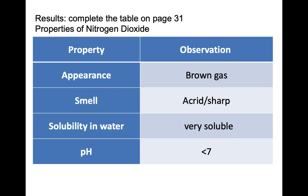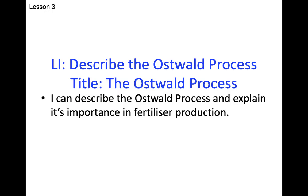Just before we go on to talk about the Ostwald process, let's compare ammonia to nitrogen dioxide. Where ammonia was a colourless gas, nitrogen dioxide is brown. Where ammonia had a very pungent smell, nitrogen dioxide is quite sharp and acrid. Again like ammonia, nitrogen dioxide is very soluble. However, unlike ammonia, nitrogen dioxide has a pH of less than 7. The process of oxidising ammonia to nitrogen dioxide is important in the Ostwald process.